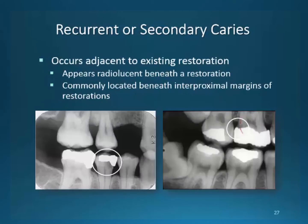Recurring and secondary decay appears around restorative material. This decay can be attributed to poor oral hygiene, diet, ill-fitting restorations, or restorations performed without complete decay removal. They are found around the margins of restorations and fillings. In the early stages, they are difficult to detect because of what we call the mock band effect that occurs between the metal restoration and the tooth structure. We will spend more time on this concept in upcoming slides.